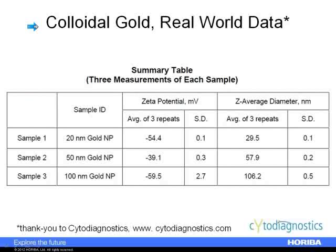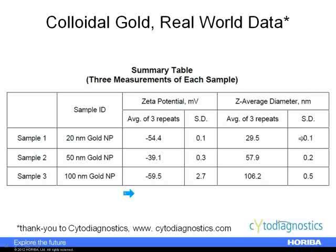What happens when we measure real-world data? This data comes from samples sent into the Irvine, California applications lab — we thank Cytodiagnostics in Canada for allowing us to show this data. They sent nominally 30, 60, and 100 nanometer colloidal particles, and sure enough we got around 30, around 60, and around 100. The customer confirmed that's about what they expect. We also measured zeta potentials for reference, which matched their expectations. We ran replicates with very small standard deviations — very good, repeatable data.